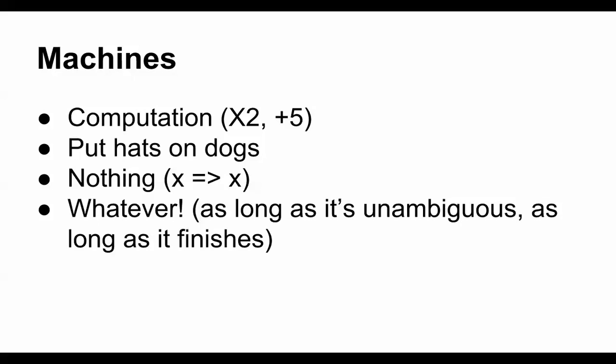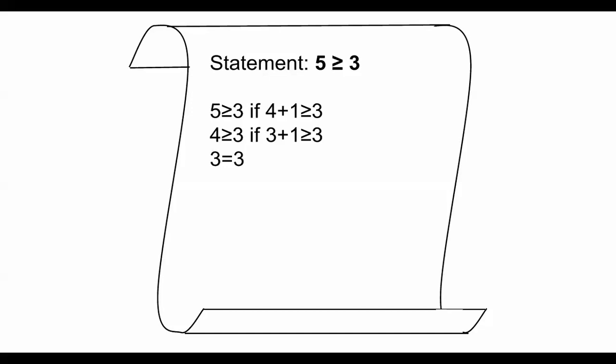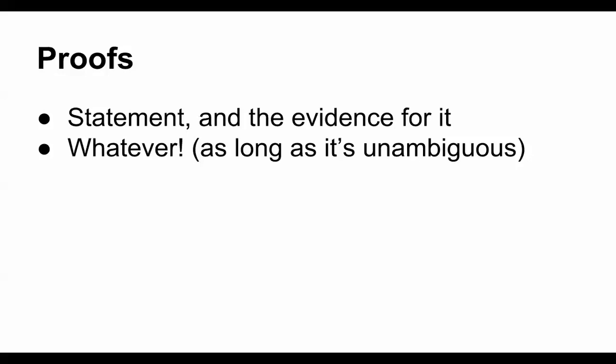The final thing you have is proofs. Proofs have a statement, and they use rules of inference to give evidence for that statement — that's all they are. Your rules of inference can be whatever you want, as long as they're unambiguous and they make sense. So: collections of things, machines, and proofs.